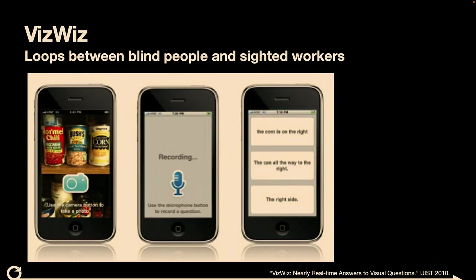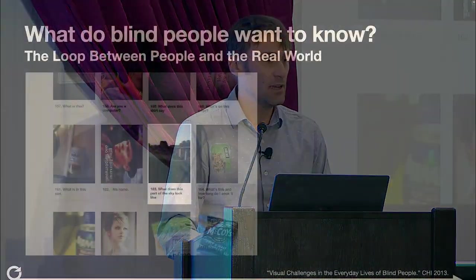In 2009, I created this iPhone app, which is pretty simple. It allowed users to take a picture, speak a question they wanted to know about that picture, and the picture and question were sent off to crowd workers. In a few tens of seconds, we were able to get answers back from people — not AI, people — to help make whatever they wanted to access accessible. It got pretty popular: a couple thousand people used it, a few hundreds of thousands of questions answered. It gave us a really interesting loop between people and what they wanted to know through that real world.